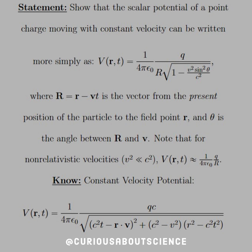What we found is that for a constant velocity potential, we have V of R and T is equal to 1 over 4π epsilon naught QC, much like last time, square root of C squared T minus R dot V squared, plus the difference of C squared minus V squared, and then times R squared minus C squared T squared. A whole lot of mess.